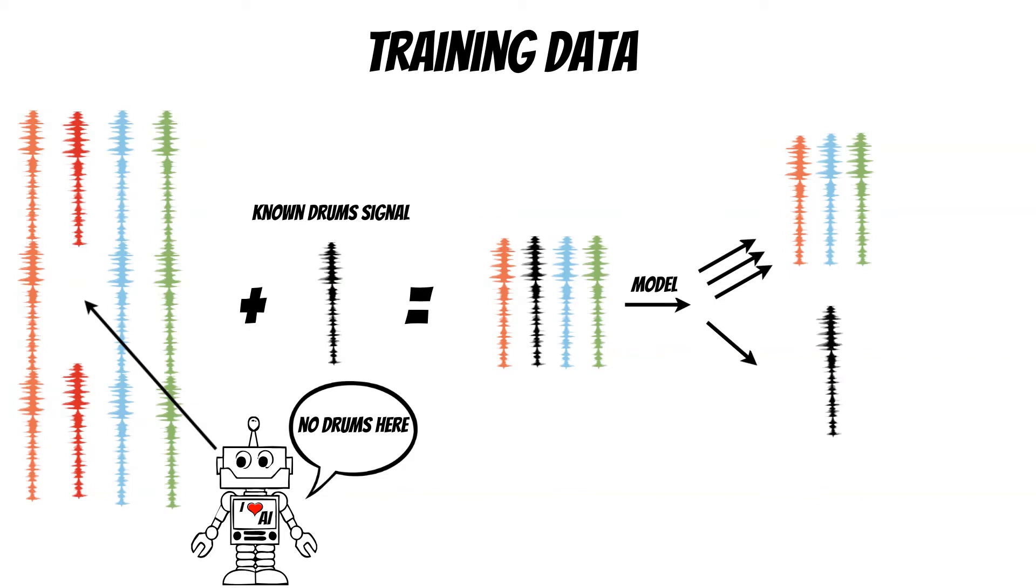Now we can compare the separation results with known drums track and mixture of the other instruments. According to this we can calculate the loss and we use it during the training. Additionally we set different loss weights for known tracks and the other.